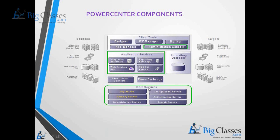We also have some core services — log service, gateway service, configuration service, authentication service, domain services, and administration services. These core services cannot be seen but work logically inside Power Center. The main activity of Informatica Power Center is to extract data from the source system, transform the data in memory, and load the data into the target system.